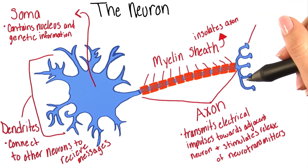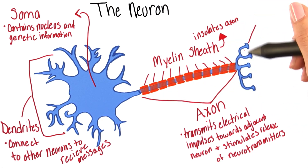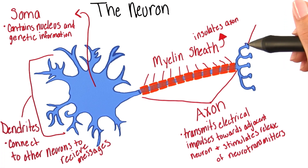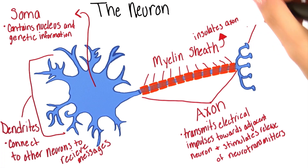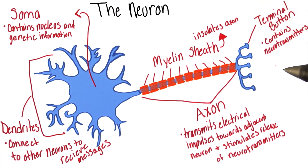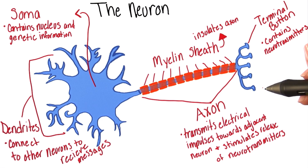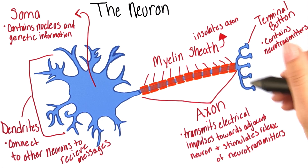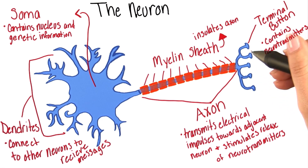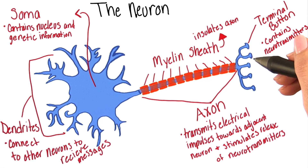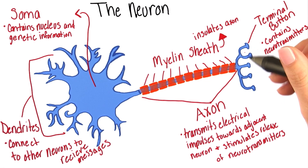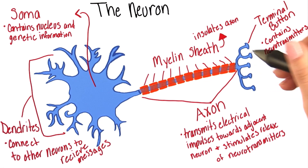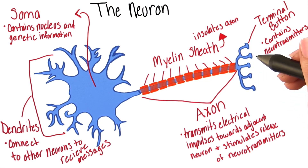At the end of each axon are the axon terminals and the terminal buttons. The terminal buttons contain tiny vesicles, or sacs, that contain neurotransmitters. Now I'm going to zoom into these terminal buttons, so we can get a closer look at the neighboring neuron and how the two connect.